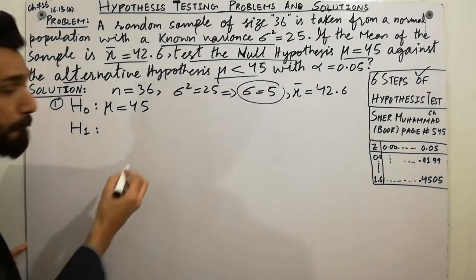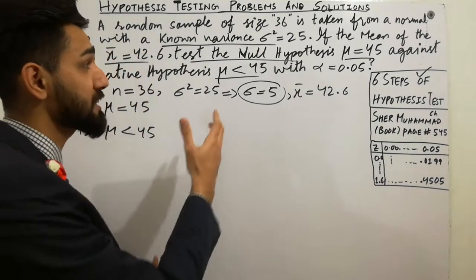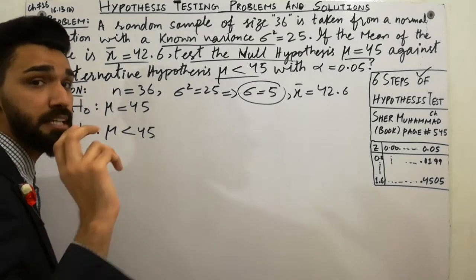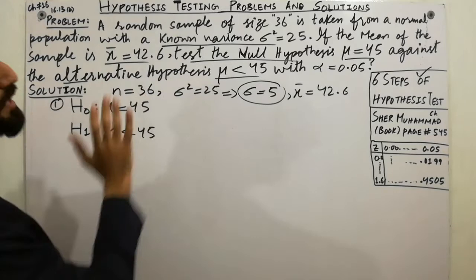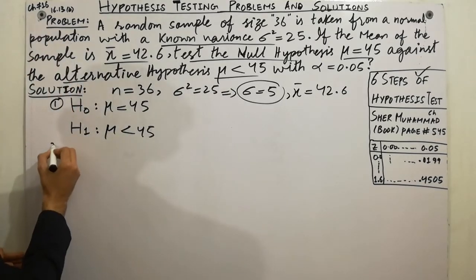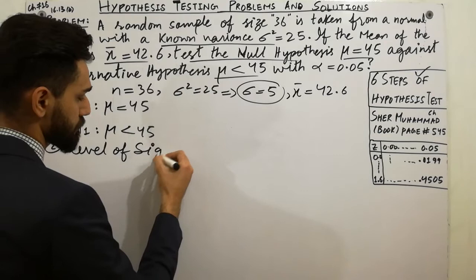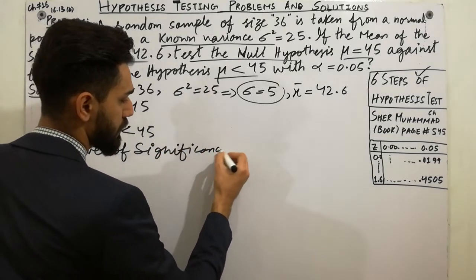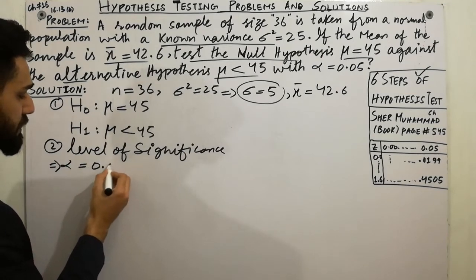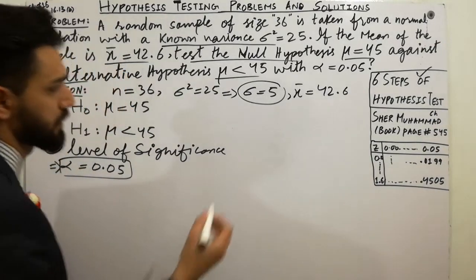The alternative hypothesis is H1: mu < 45. I will upload more problems of hypothesis testing where the null hypothesis is not directly given — those lectures will be very helpful. Step two: the level of significance, alpha, is already given here as alpha = 0.05.